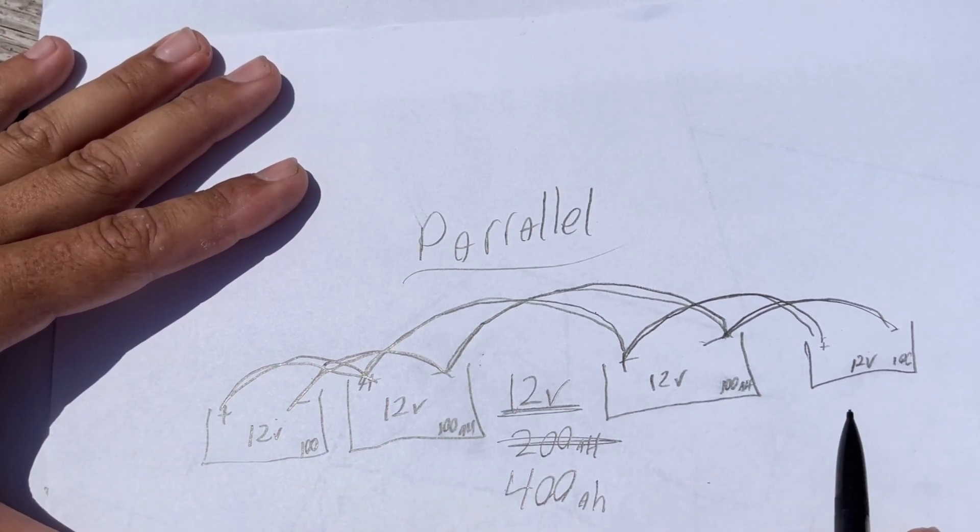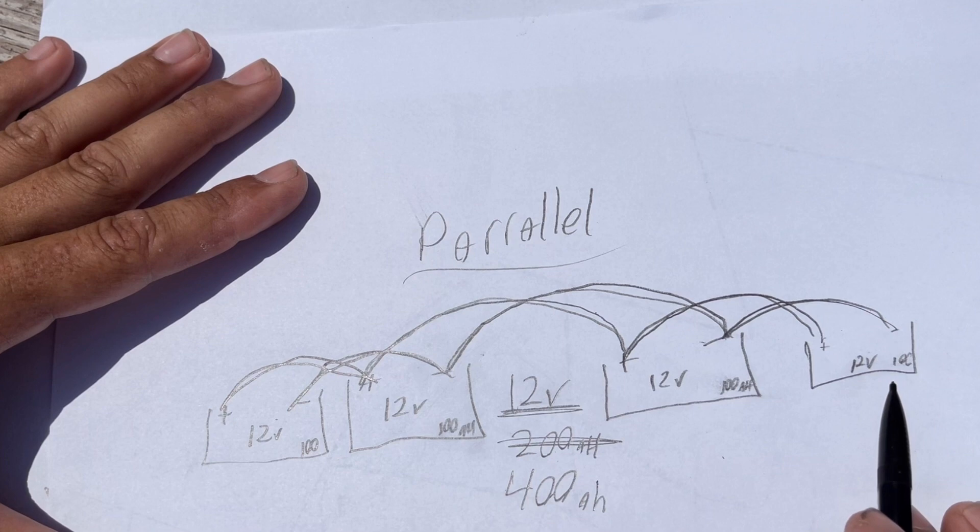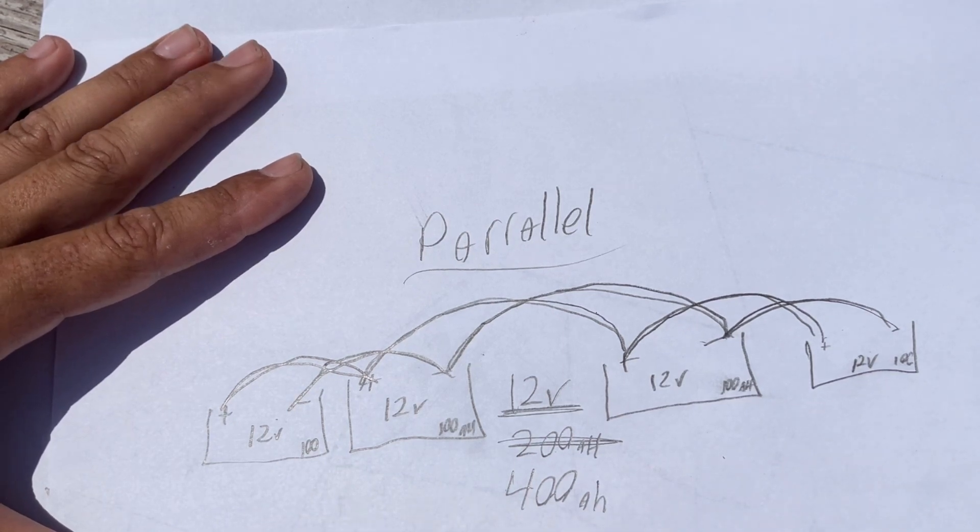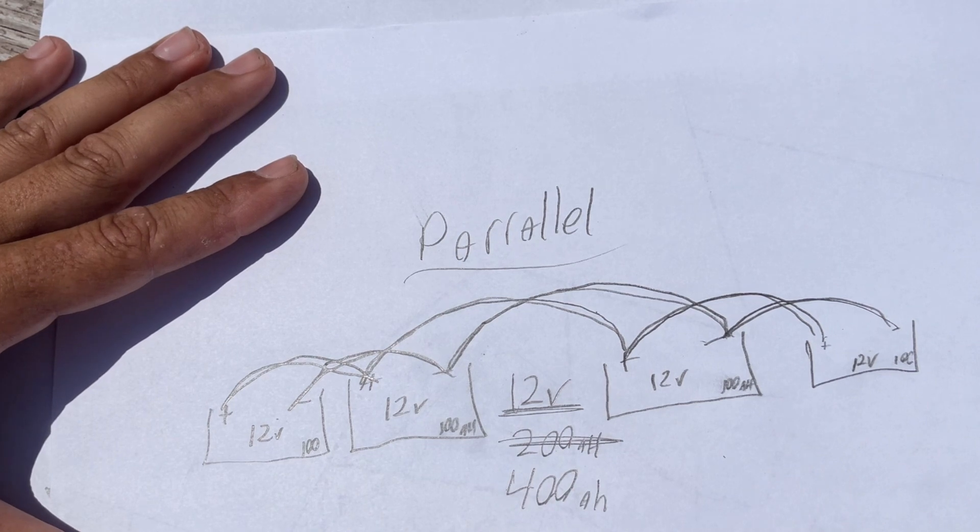And this is where, in a typical RV setup, if you were to connect your batteries in parallel, you have, say, four 12-volt lithium batteries all at 100 amp hours. That's how you do a parallel connection.